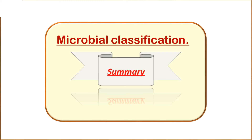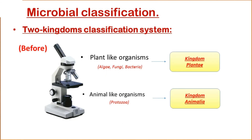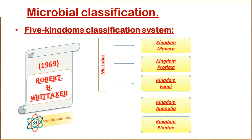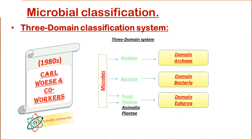To conclude microbial classification: before the invention of the microscope, organisms were classified into two kingdoms — Kingdom Plantae and Kingdom Animalia. Then in 1866, all microbes were classified into Kingdom Protista by Ernst Haeckel. In 1969, Robert H. Whittaker classified them into three kingdoms: Kingdom Monera, Protista, and Kingdom Fungi. Then in the 1980s, Carl Woese and his co-workers placed microorganisms into three domains — Domain Archaea, Domain Bacteria, and Domain Eukarya — particularly into Kingdom Protista and Kingdom Fungi.